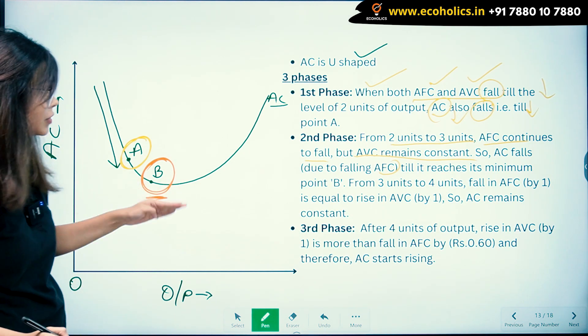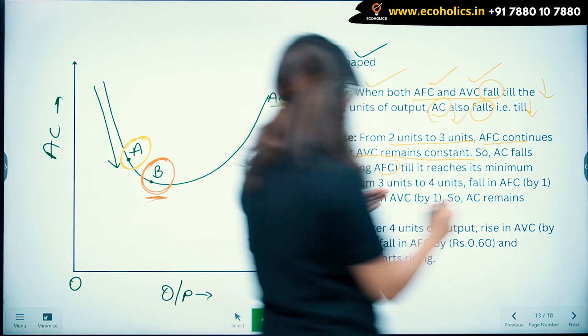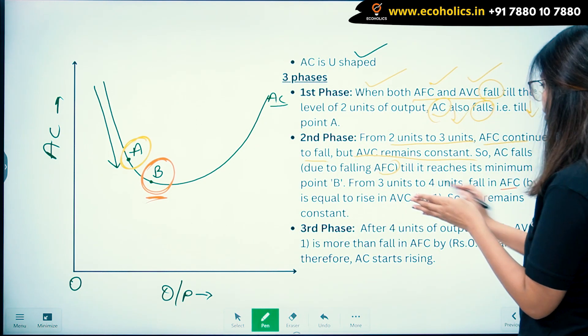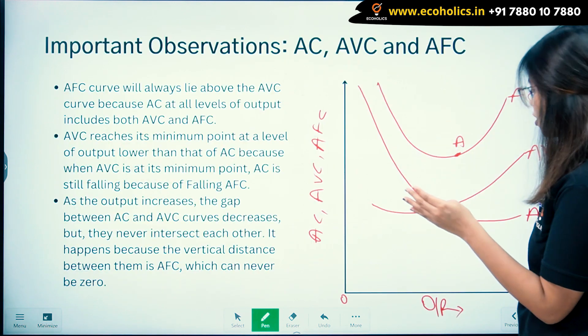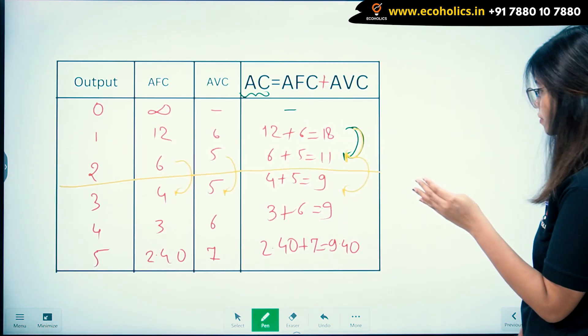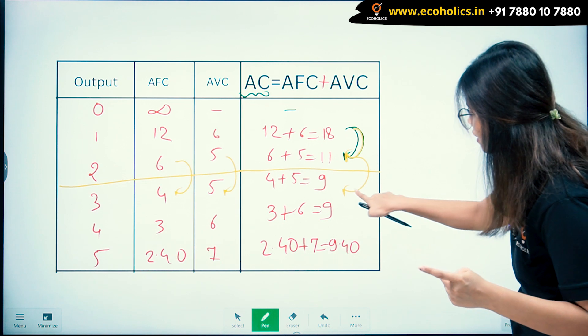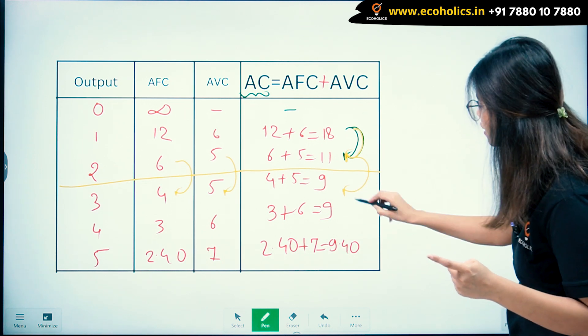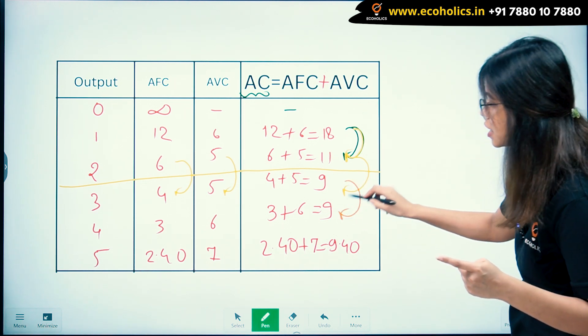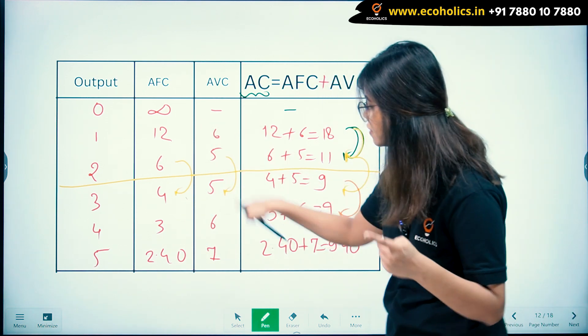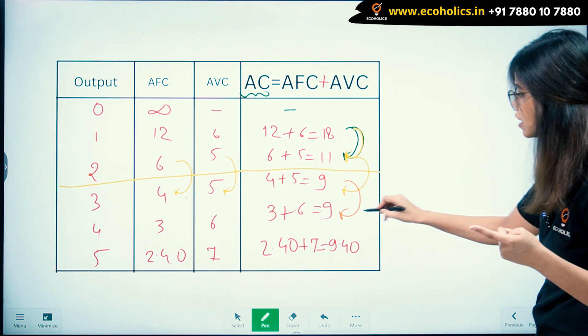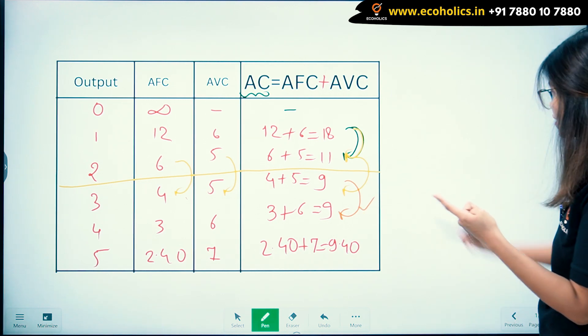From three to four units, fall in AFC by one equals rise in AVC by one, so AC remains constant. You can see your AC is remaining constant. AFC is still falling but AVC is rising, and that is why AC is remaining constant. This is its minimum point - that is still point B.